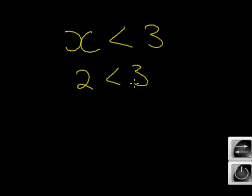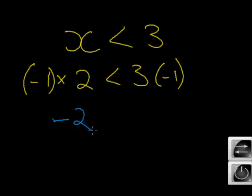Okay, let's multiply both sides with a negative 1. Multiply negative 1, and on this side multiply with a negative 1. What answer do I get now? Minus 2. Minus 2, and on the other side? Minus 3. Negative 3. What sign belongs between these two? Greater than. A greater than. Can you see why?